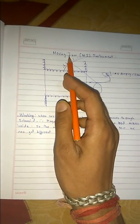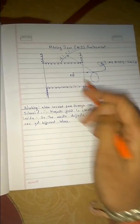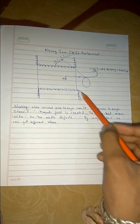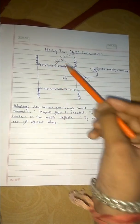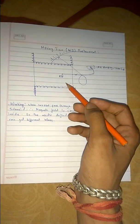This is a moving iron instrument, or MI instrument. As the name suggests, everything in this instrument is related to moving iron. This is our circuit - as you can see, this is a solenoid. When current is supplied, it passes through the solenoid, and as a result, a magnetic field is created between the coil ends.